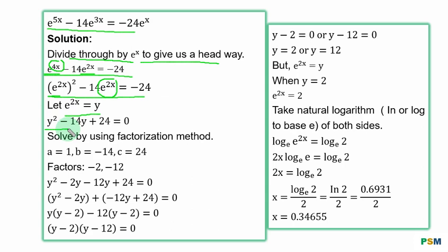If you put y here, it becomes y^2 - 14y. In order to solve the resulting quadratic equation, you have to transfer this term to the left-hand side. It becomes -24 = 0. Solve by using factorization method.